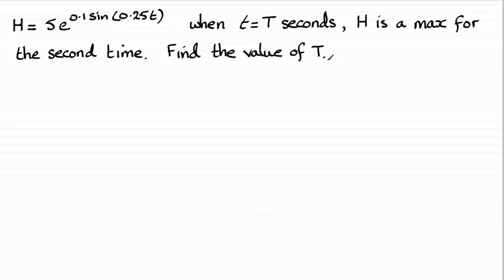Now in the previous part of the question, we saw that maximum height h was controlled by the function sine of 0.25t because the sine function can only go between minus 1 and 1. And so we get that maximum when the sine of 0.25t is 1. So that's where we start.